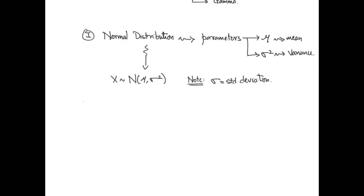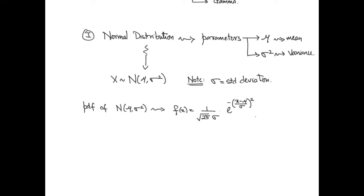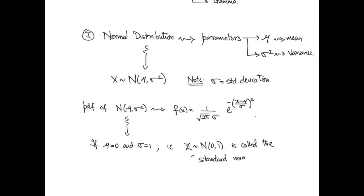The probability density function of the normal distribution is given by the formula 1 over square root of 2 pi times sigma times e to the minus (X minus mu) over sigma, the whole squared. In the special case when mu equals 0 and sigma equals 1, we get what is known as the standard normal distribution, typically denoted by capital Z.